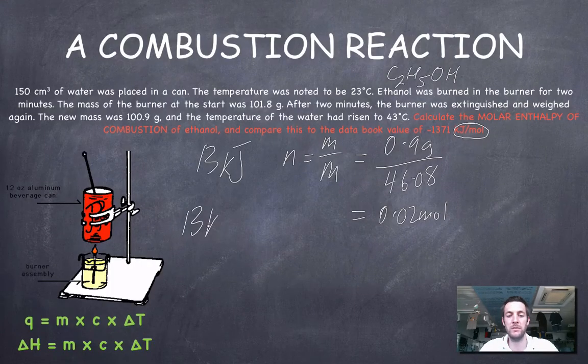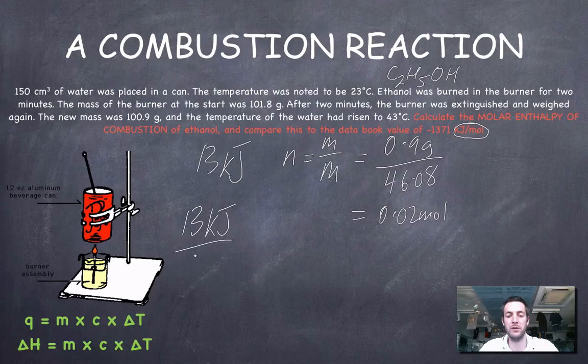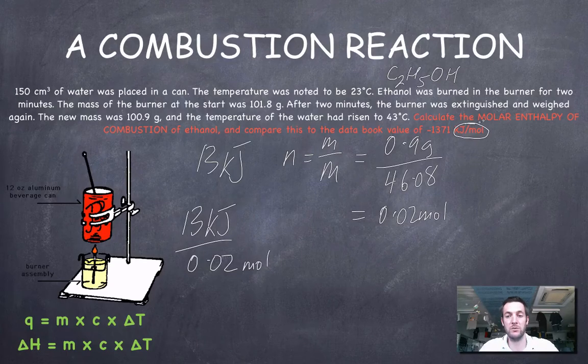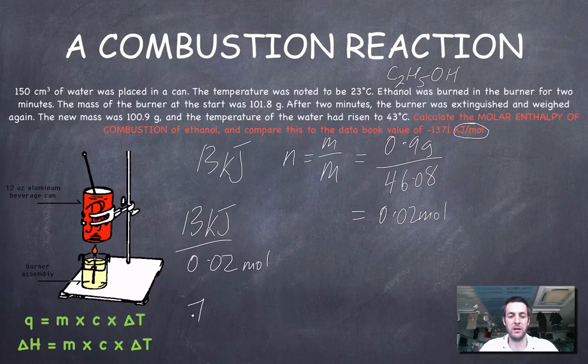So I'm going to take my 13 kilojoules. I'm going to divide it by 0.02 moles. Check here, kilojoules per mole, so I'm going to get an answer with the right units. And if I do this, to one significant figure again, I get 700 kilojoules per mole.